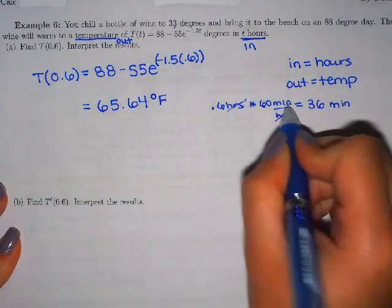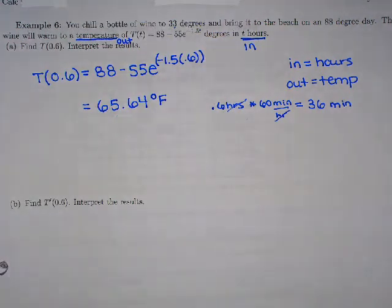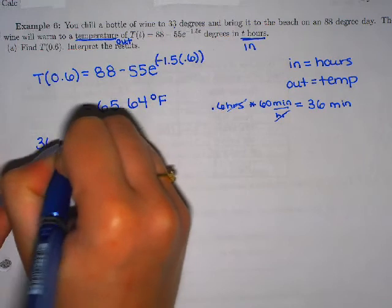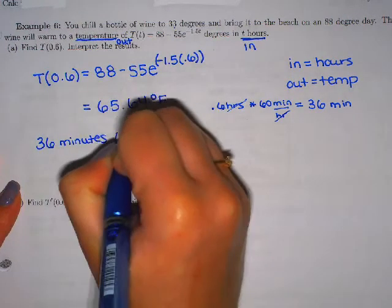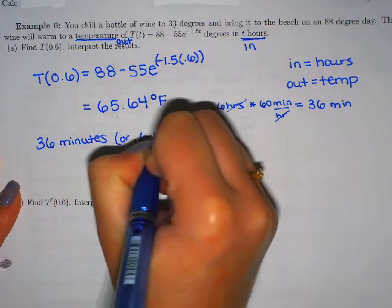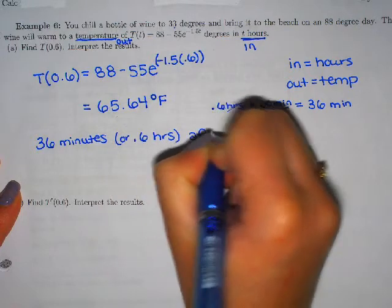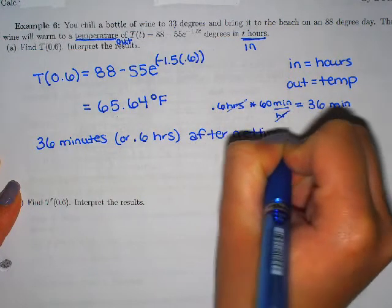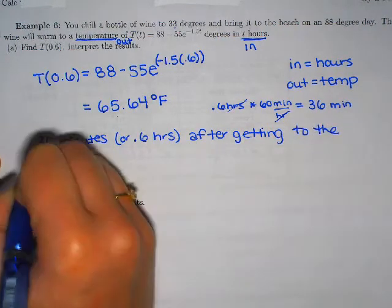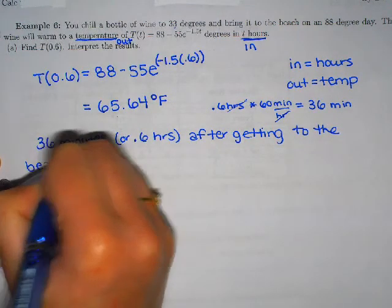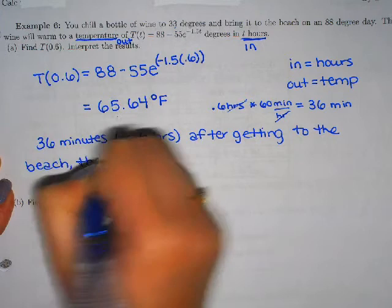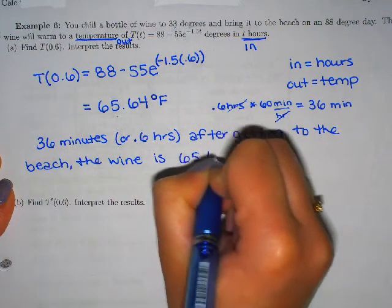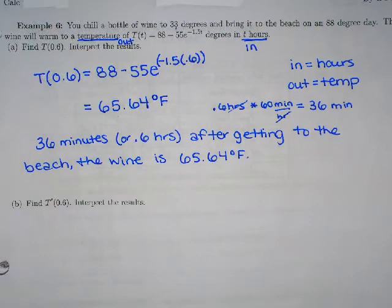Totally up to you. 0.6 of 60 though is 36 minutes. These hours will cancel out and we'll be in minutes instead. 0.6 of 60 gives us 36 minutes. So 36 minutes or 0.6 hours.